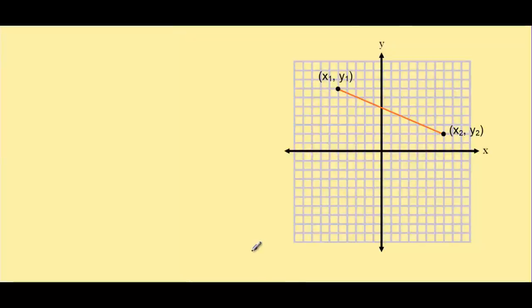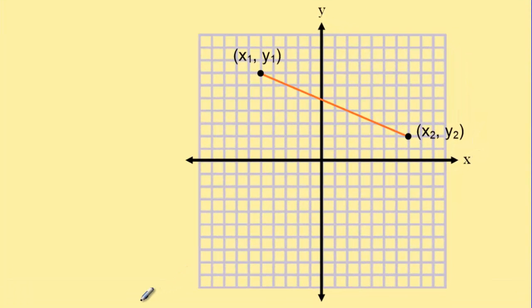Here's that same diagram again. But in place of putting numbers in for the points, we're just going to use x1 and y1 for our first point, point A, and x2 and y2 for our second point, point B.